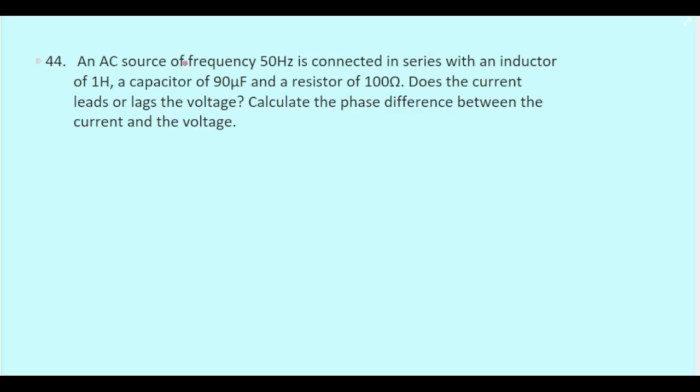This question is from the physics model paper 1 of 2024-25, question number 44. An AC source of frequency 50 hertz is connected in series with an inductor of 1 henry, a capacitor of 90 microfarad, and a resistor of 100 ohms. Does the current leads or lags the voltage? Calculate the phase difference between the current and the voltage.